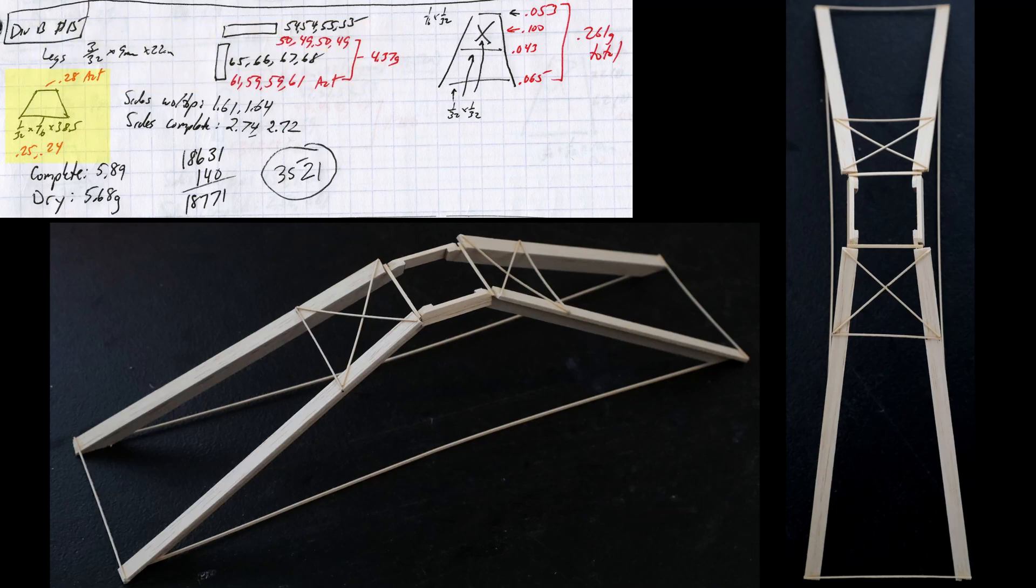The primary tension pieces were 1/32nd by 1/16th inch bass and weighed 0.25 and 0.24 grams at their actual lengths of 38.5 centimeters. The top part of the side was similar to the vertical leg part and both 4 centimeter pieces together weighed 0.28 grams.